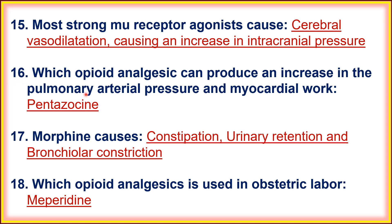Sixteenth, which opioid analgesic can produce an increase in pulmonary arterial pressure and myocardial work? That is pentazocin. Pentazocin is an opioid analgesic which produces an increase in pulmonary arterial pressure and myocardial work. Seventeenth, morphine causes constipation, urinary retention, and bronchoconstriction as side effects.